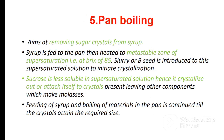The fifth stage of sugarcane processing is pan boiling. At this stage, sugar crystals are obtained from syrup. Syrup from the evaporation section is fed to the pan, then heated to the metastable zone of supersaturation. Slurry or seed is introduced to this supersaturated solution to initiate crystallization. Sucrose is less soluble in the supersaturated solution, hence it crystallizes out or attaches itself to crystals present, leaving other components which make molasses.